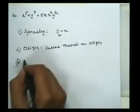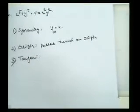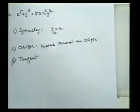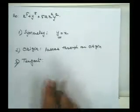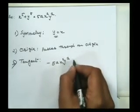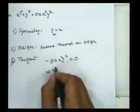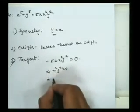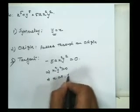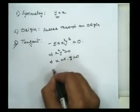Third point: tangent at the origin. To find the tangent at the origin, equate the lowest degree term to zero. In this case the lowest degree term is -5ax²y² = 0, which means x²y² = 0, giving x = 0 and y = 0. So in this case also x = 0 and y = 0 are tangents, meaning the y-axis and x-axis are the tangents at the origin.